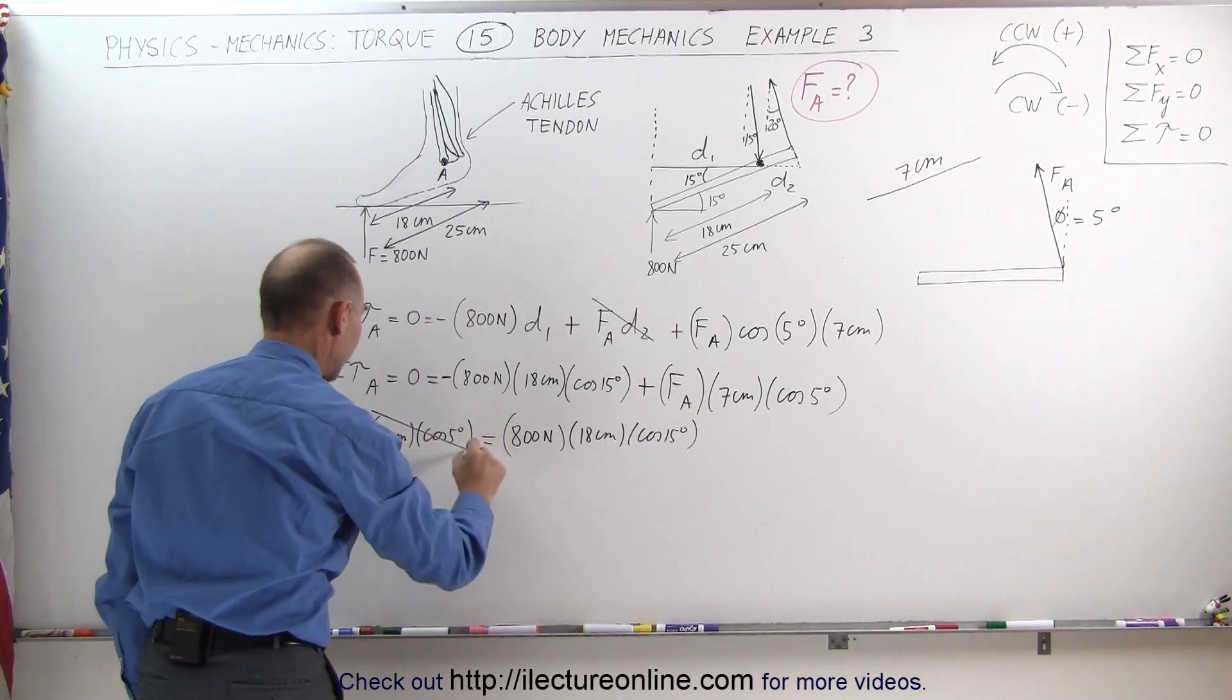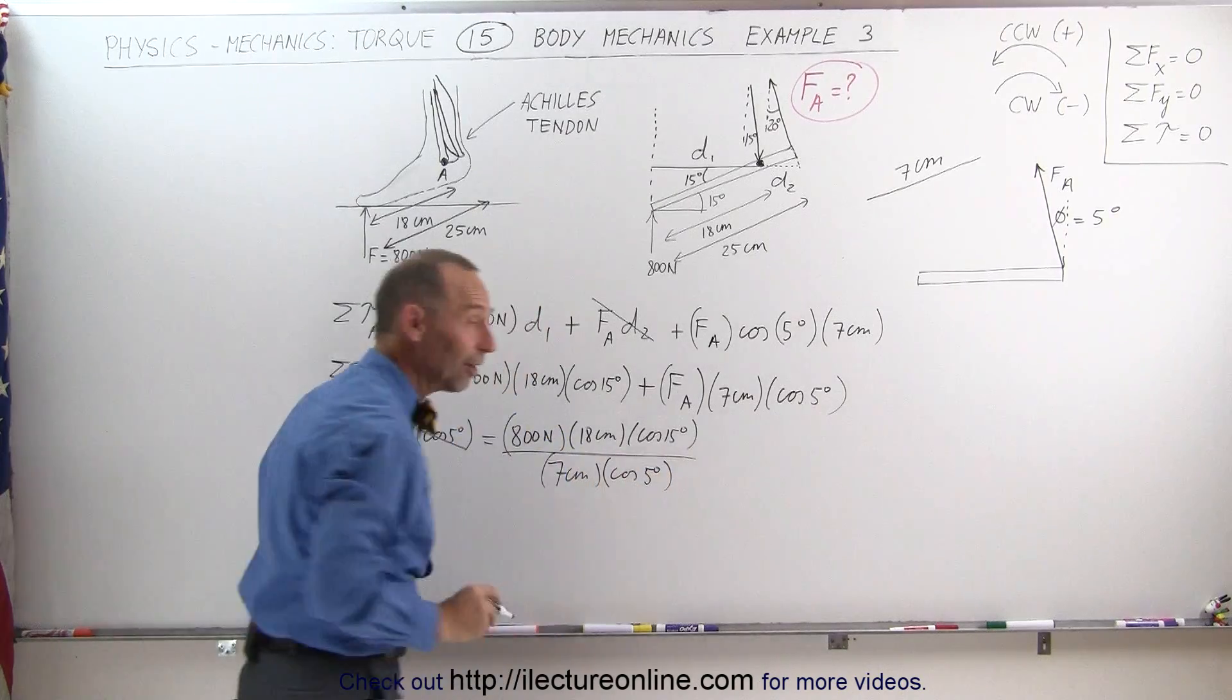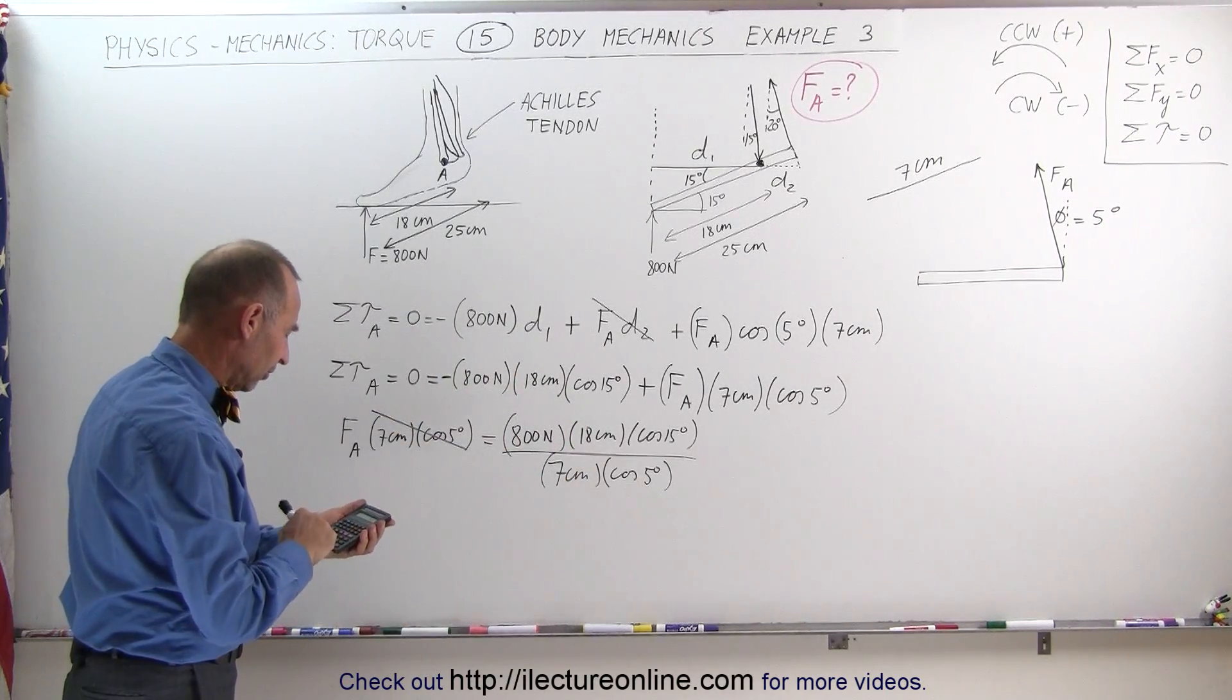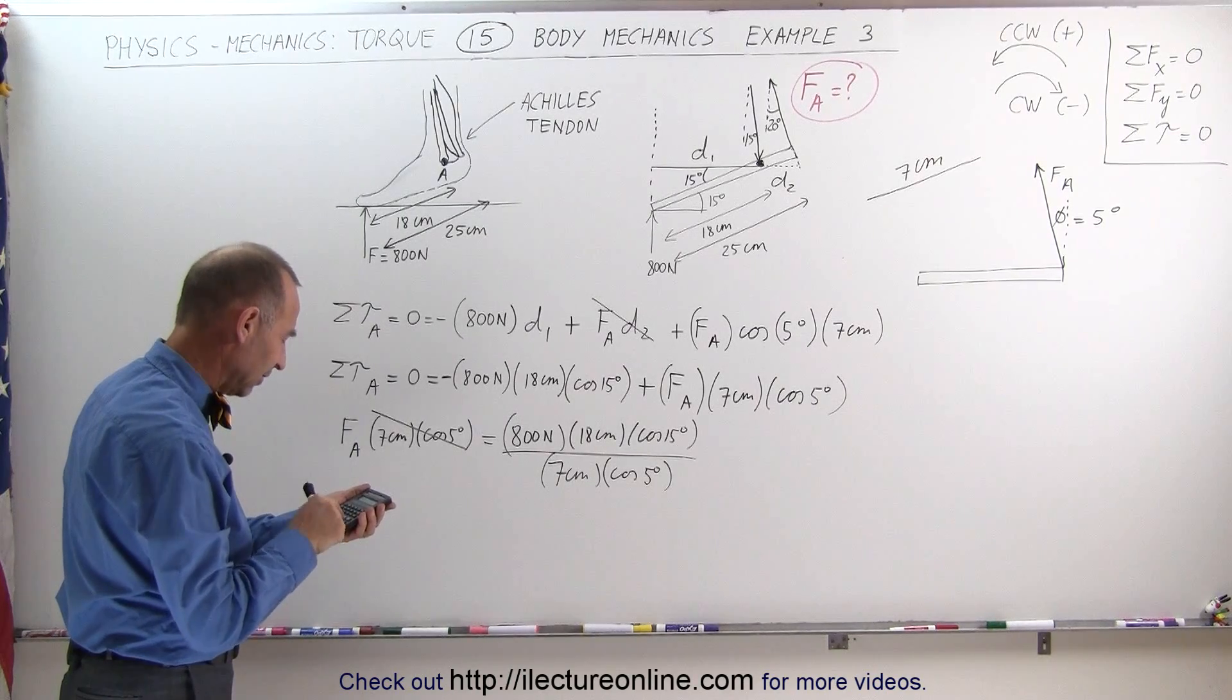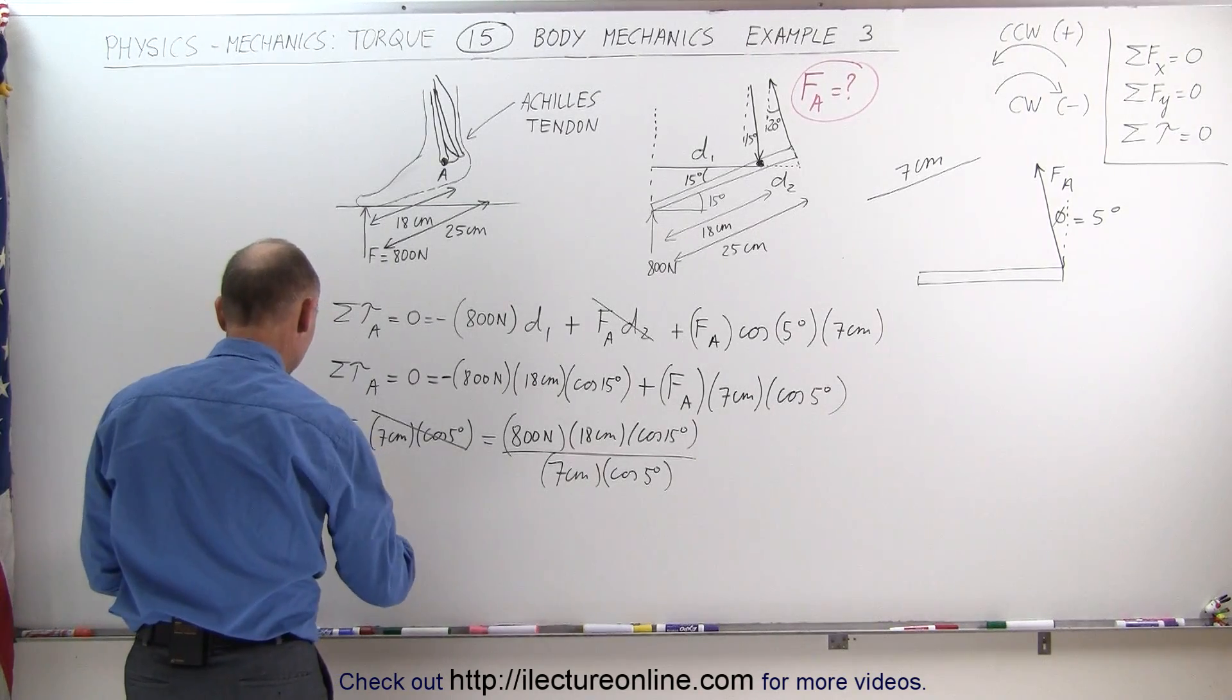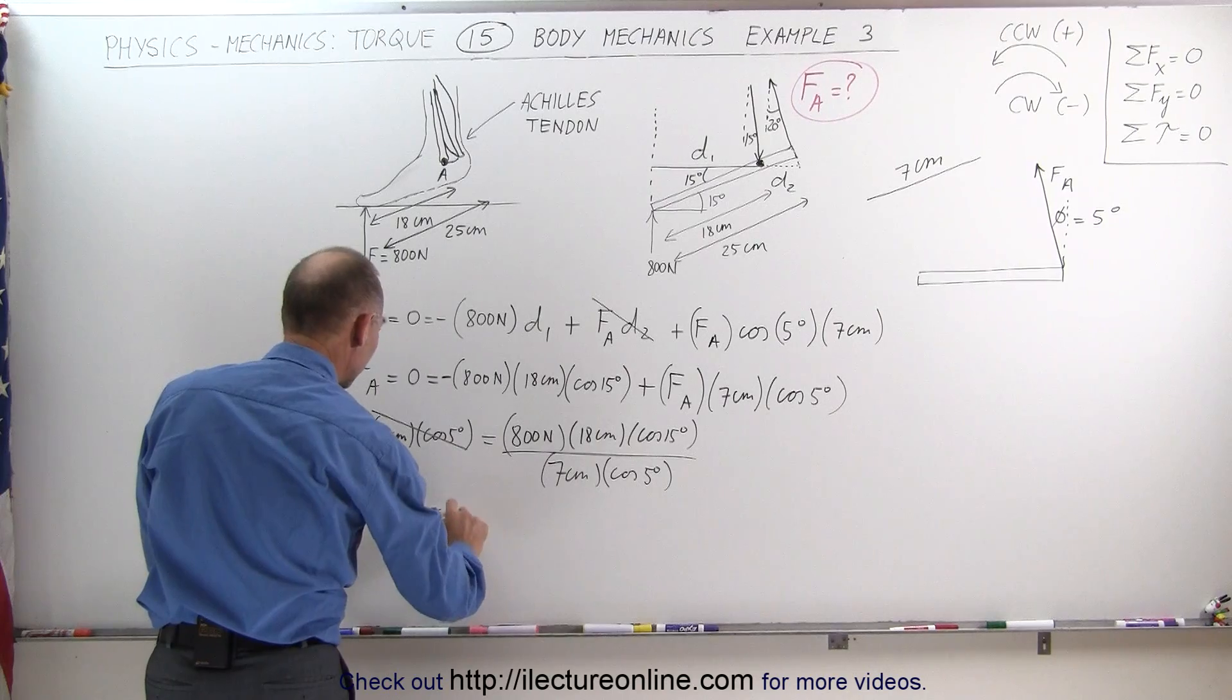Then dividing both sides by 7 centimeters and the cosine of 5 degrees we're now ready to find out how strong the Achilles tendon needs to be simply to hold one person in place on one foot like that. 800 newtons times 18 times cosine of 15 degrees divided by 7 divided by the cosine of 5 degrees. It turns out the Achilles tendon must be able to exert a force of 1,995 newtons.